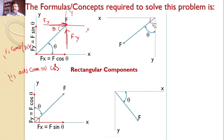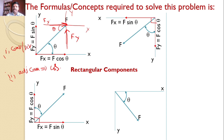Similarly, consider another force F making an angle theta with the y-axis. To resolve this force along the x and y-axis — since the angle between them is 90 degrees — and since this force F is divergent, the two component forces Fx and Fy must also be divergent. Since the force makes angle theta with the y-axis, the y-component becomes F·cosθ and the horizontal component becomes F·sinθ.